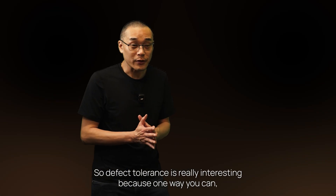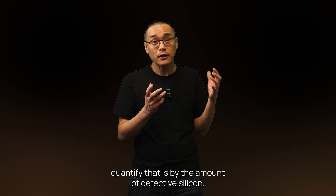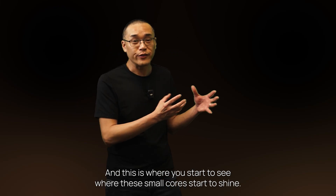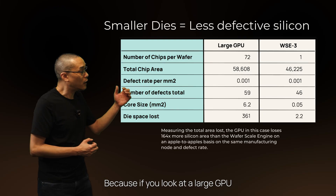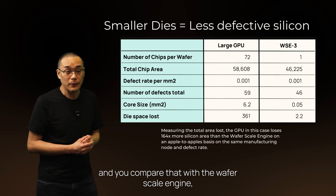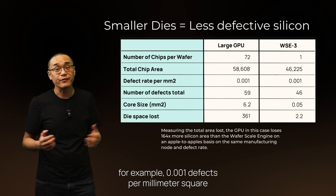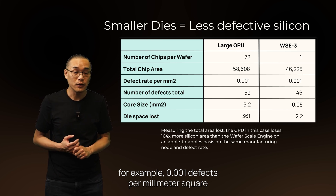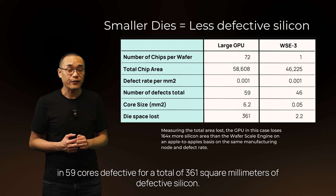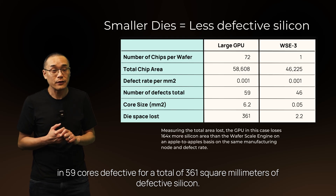The defect tolerance is really interesting because one way you can quantify it is by the amount of defective silicon. This is where small cores start to shine. If you look at a large GPU and compare that with the wafer scale engine, assuming the same defect density — for example, 0.001 defects per square millimeter — on the GPU, that results in 59 cores defective, or a total of 361 square millimeters of defective silicon.